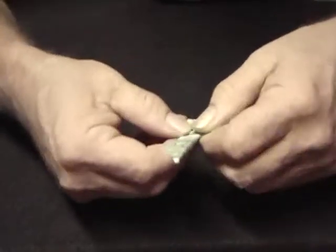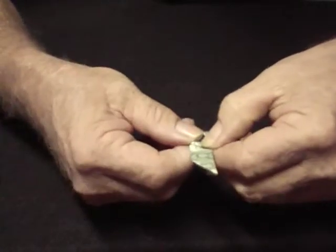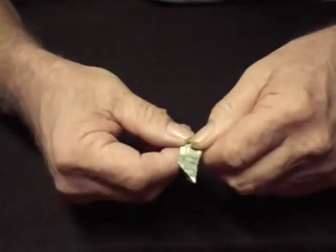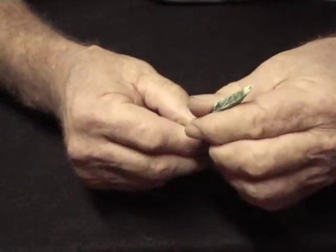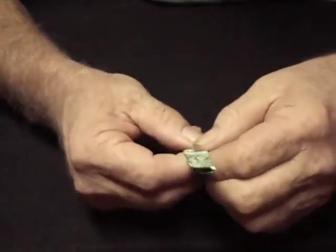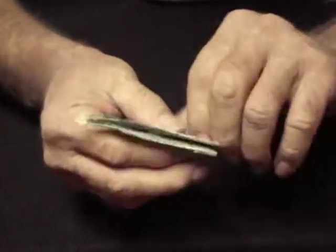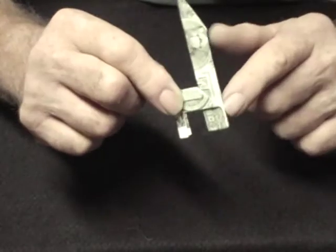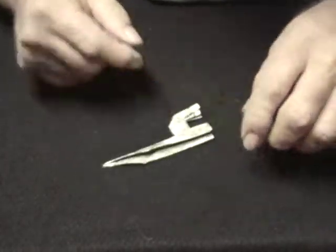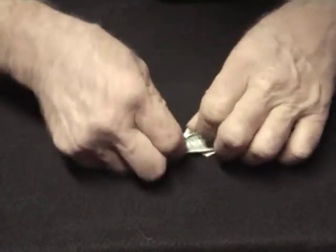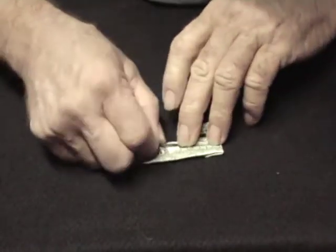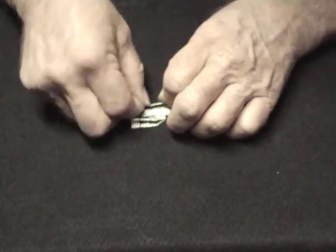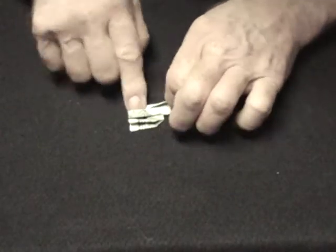Sometimes you've got to take it out a little bit until you get the legs pretty close to the same height. Again, we're going to do the same thing with this fold. We're going to open it up and fold each edge toward the middle, almost to the middle, not quite, because we have to leave room to close the fold back.